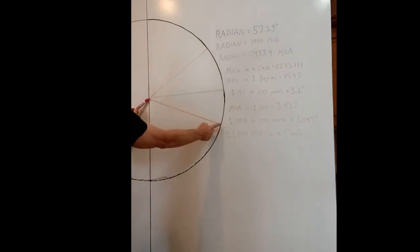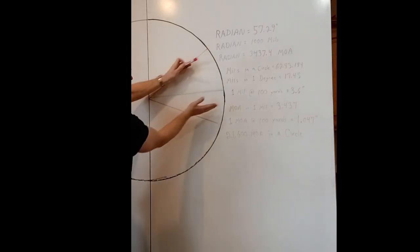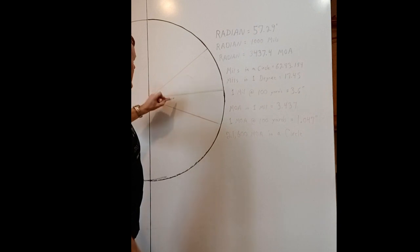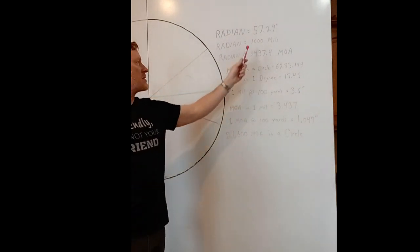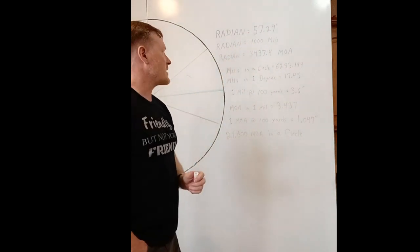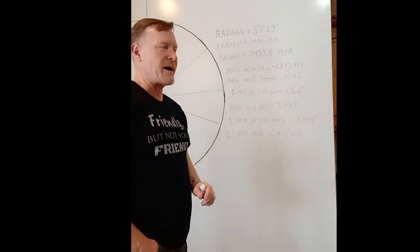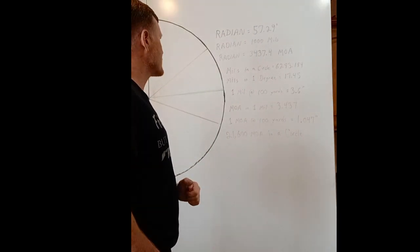So here we have the radius. And if you take that same distance and put that out here on the circumference, this right here is one radian. A radian is really close to 57.29 degrees. It's not exact because we're dealing with pi, so we're going to use some approximates there.